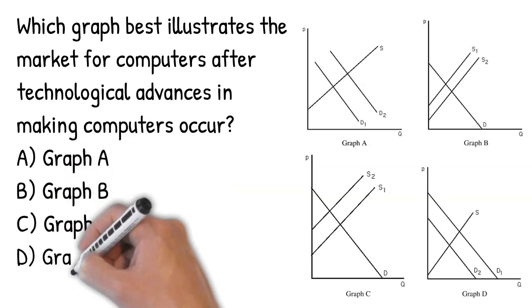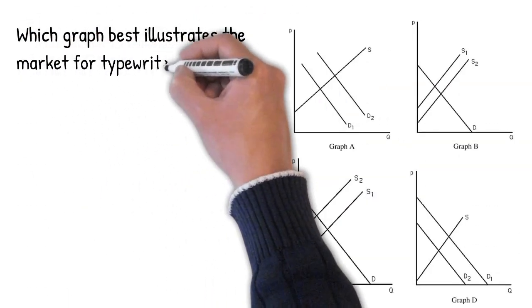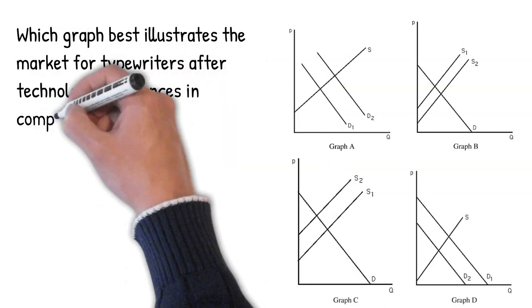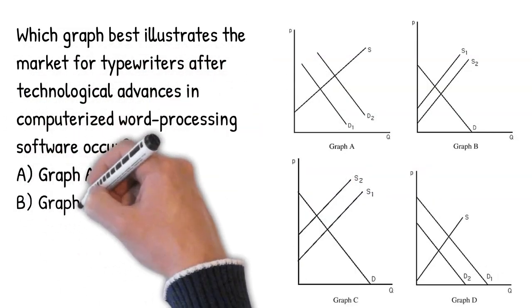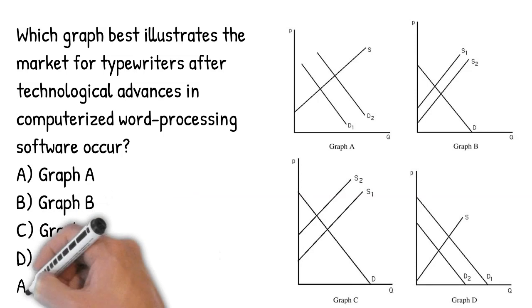Technological advances shift the supply curve of computers to the right. Computers and computer software are substitutes, so when the demand for computer software increases, the demand for typewriters decreases. The demand curve for typewriters shifts to the left.